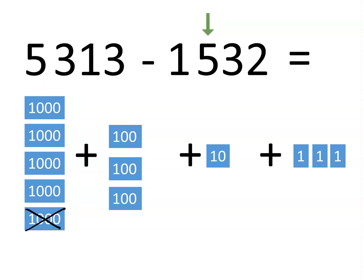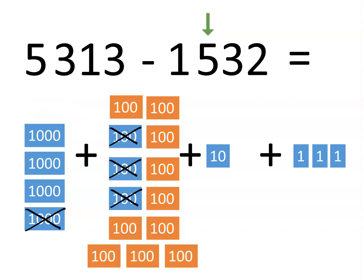Next, let's try and remove 5 hundreds. Since we only have 3 hundreds, but we need to take away 5, we need to trade. Let's trade 1,000 for 10 hundreds. Now we can take away 5 hundreds.